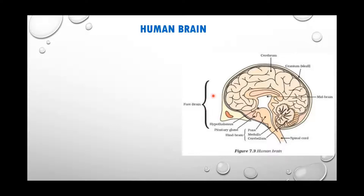The forebrain has the cerebrum, where most of our thinking and voluntary actions are performed. There are two types of actions: voluntary actions — those controlled by us, like clapping, walking, and running, which we can stop by choice — and involuntary actions, which cannot be controlled by us, such as breathing and blood pressure.